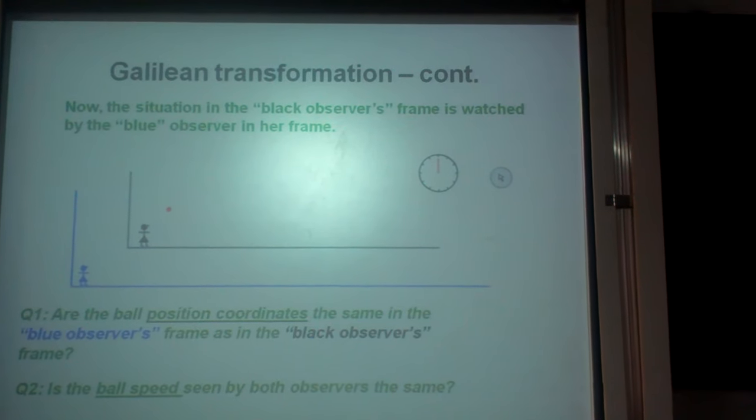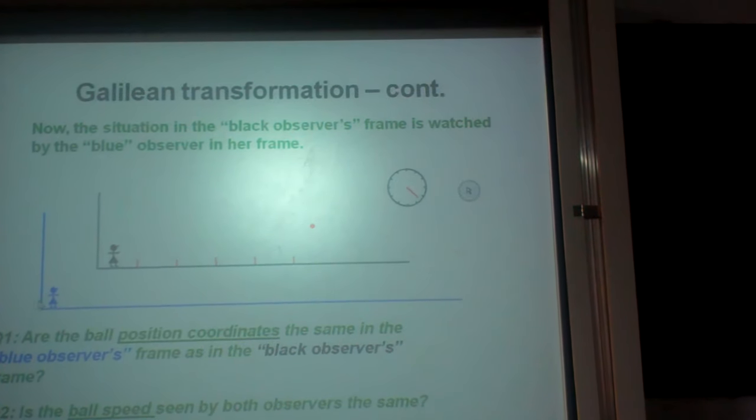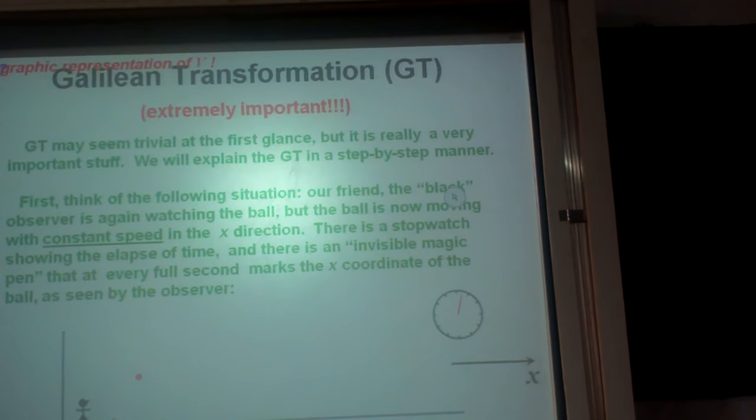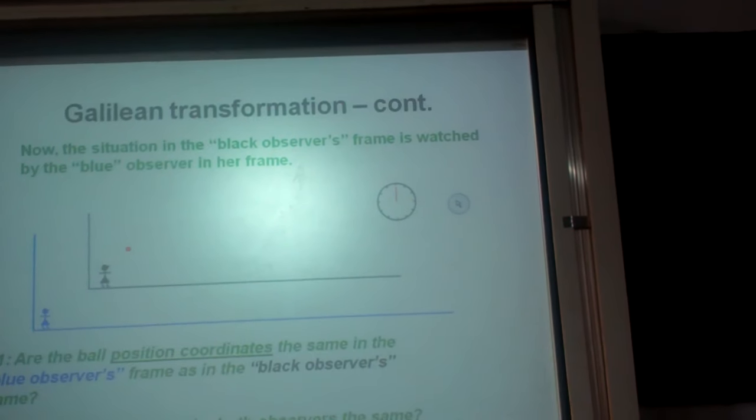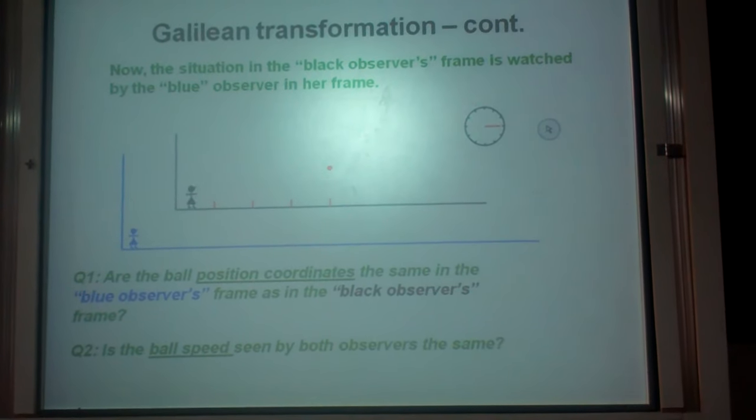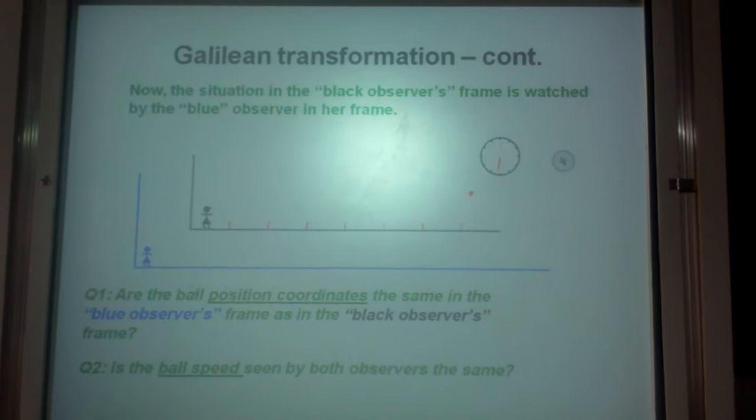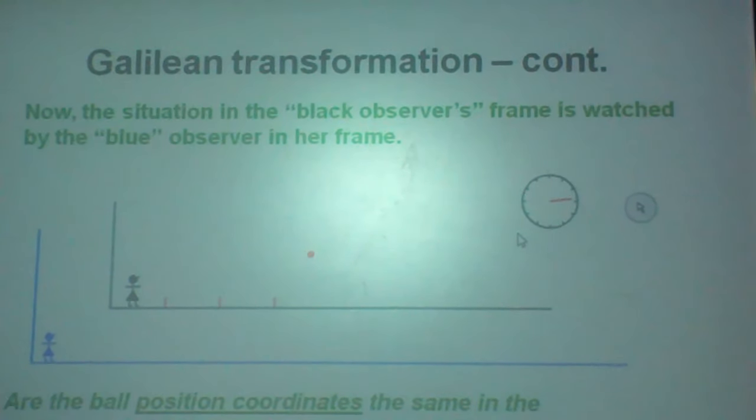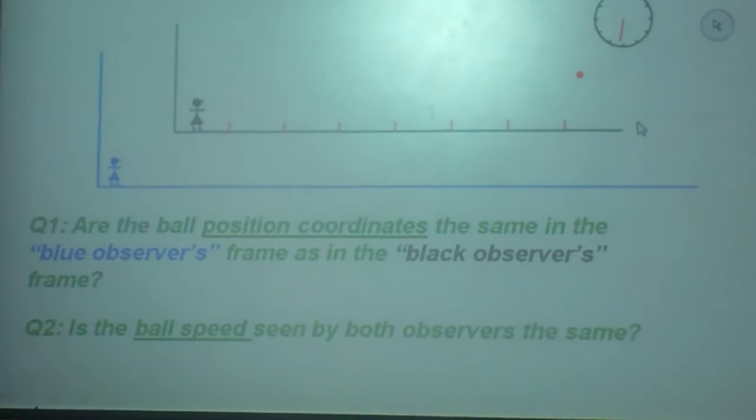So what we can do is, the black observer is watched by the blue observer. However, earlier I just showed you only this. He is moving. Now this moving is observed from here. Now the question is,